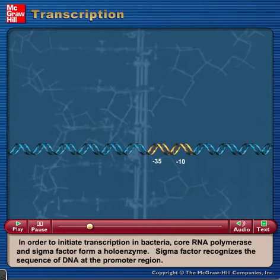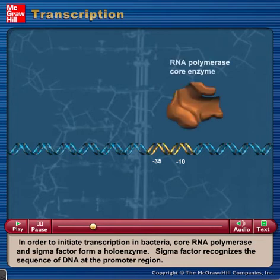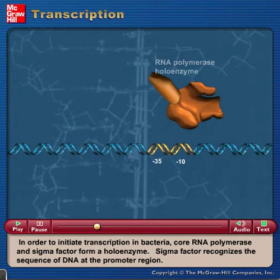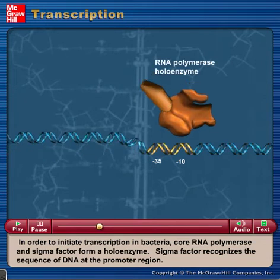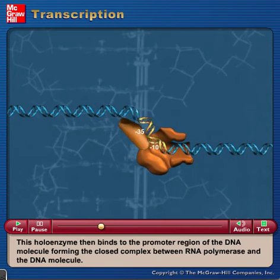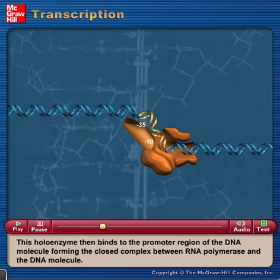In order to initiate transcription in bacteria, core RNA polymerase and sigma factor form a holoenzyme. Sigma factor recognizes the sequence of DNA at the promoter region. This holoenzyme then binds to the promoter region of the DNA molecule.